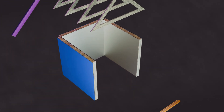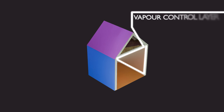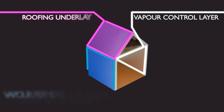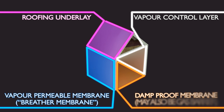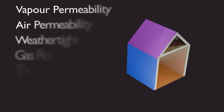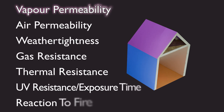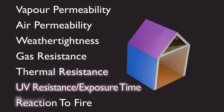There are four primary applications for construction membranes in most types of building: vapour control layers, which are typically used internally; roofing underlays; breather membranes, or more accurately, vapour permeable walling underlays; and geomembranes used for damp and gas protection. These membranes can all be further classified according to vapour permeability, air permeability, weather tightness, gas resistance, thermal resistance, UV exposure time, and reaction to fire. The importance of these properties depends on the application and clearly not all are applicable in every situation.